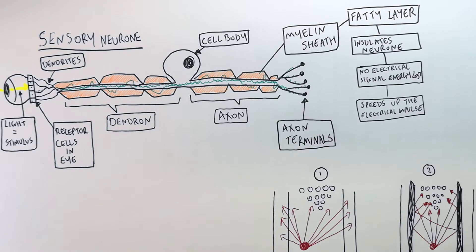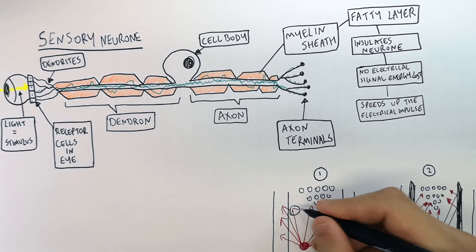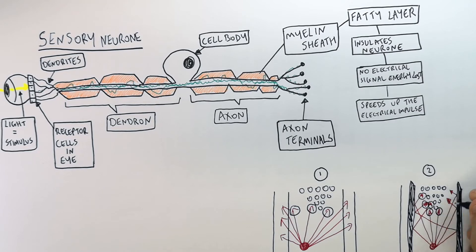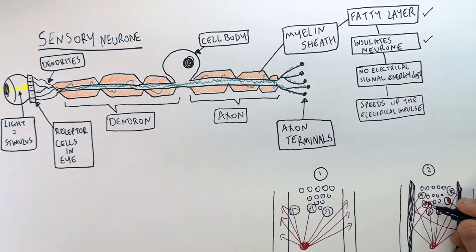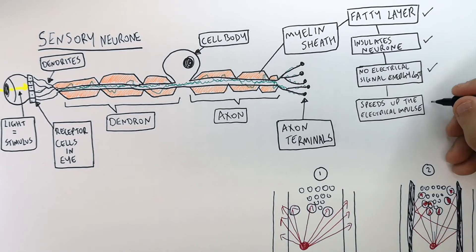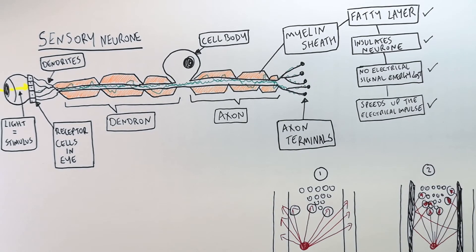So as you can see with side number one fewer impulses get to the end of the neuron than side number two because side number two has the myelin sheath which is a fatty layer. So it insulates the neuron so no electrical impulse is lost which then speeds up the transmission of electrical impulse. That's what the myelin sheath does.